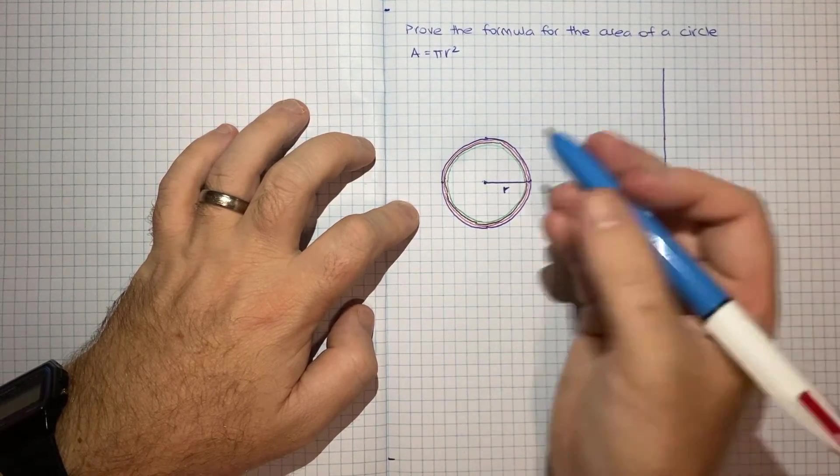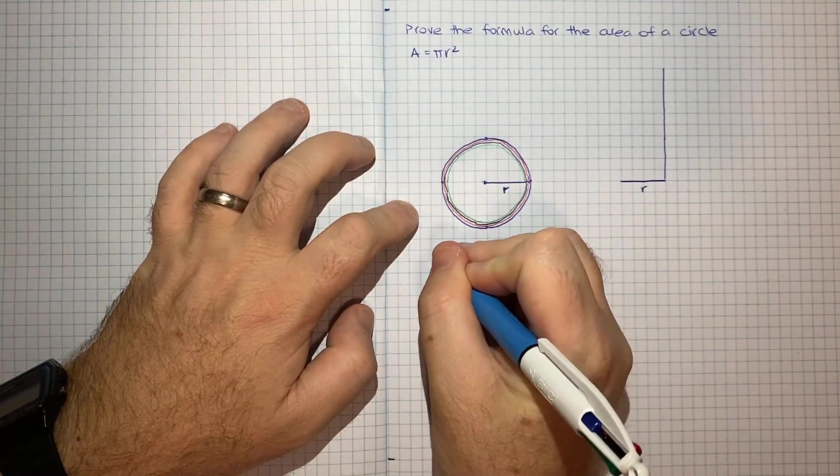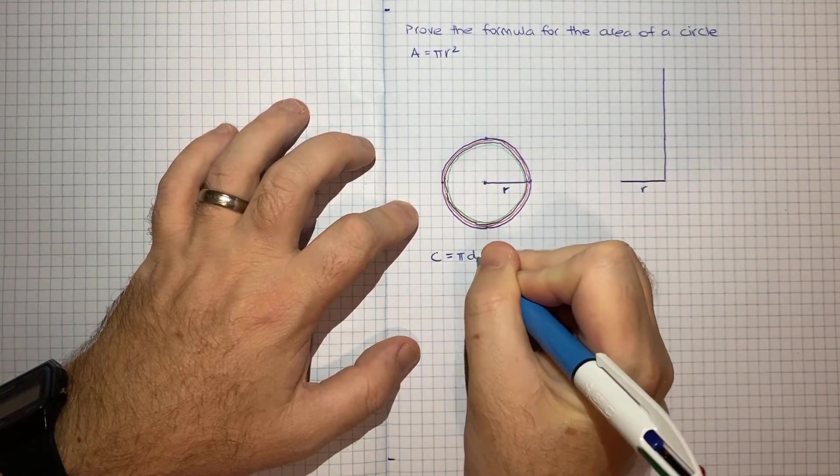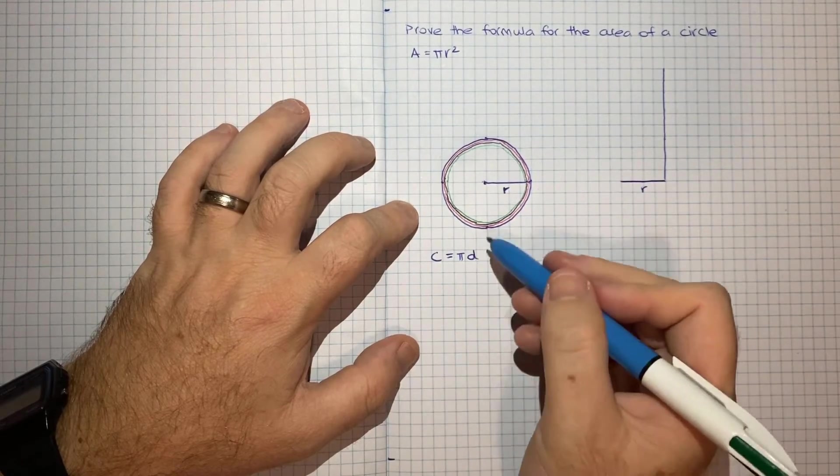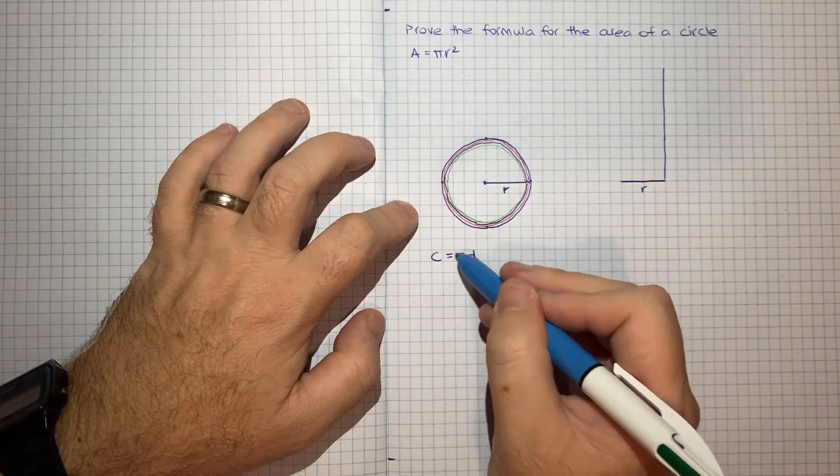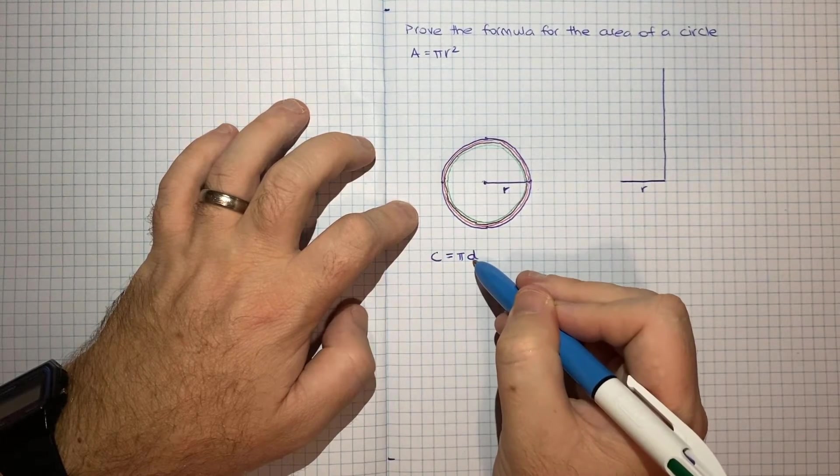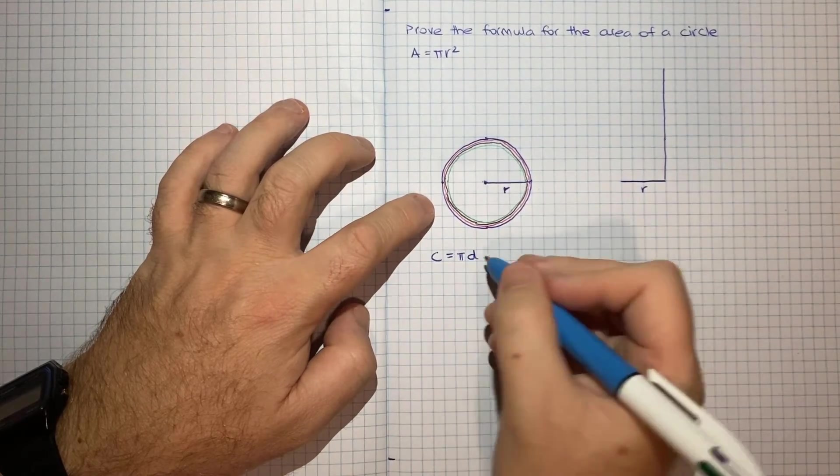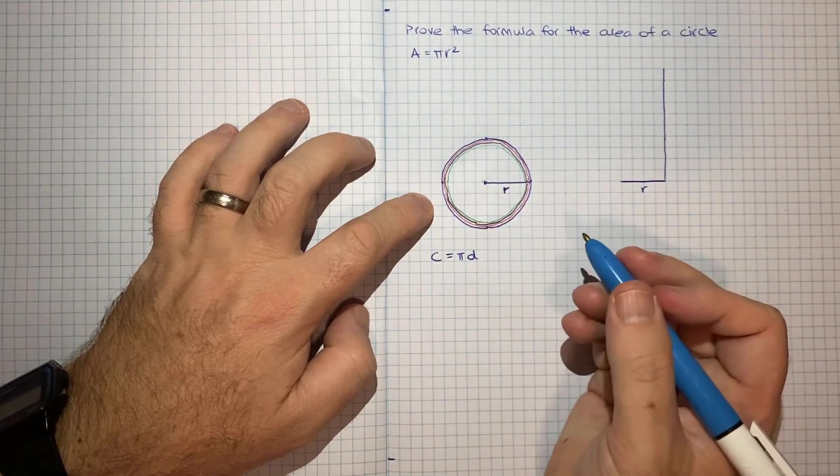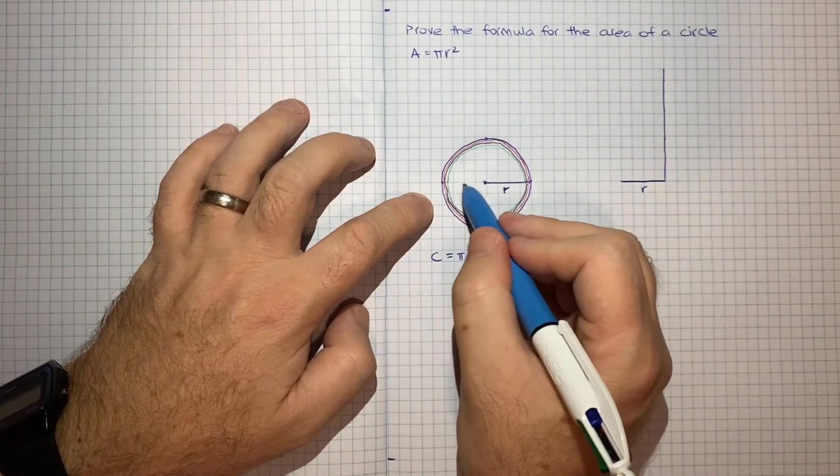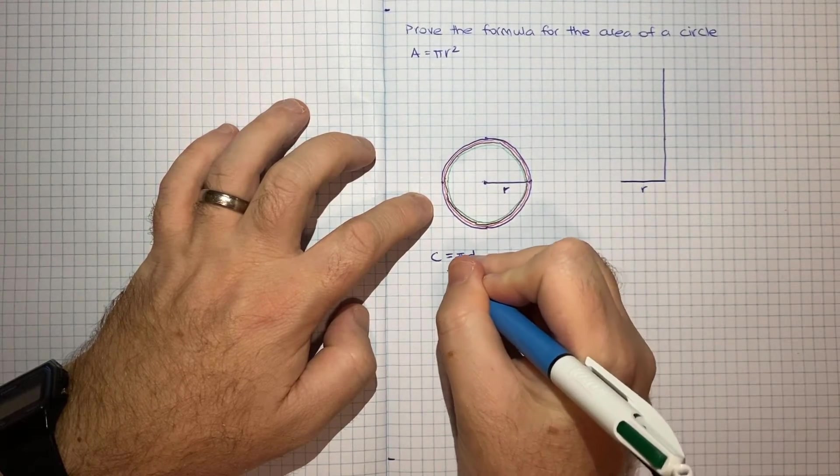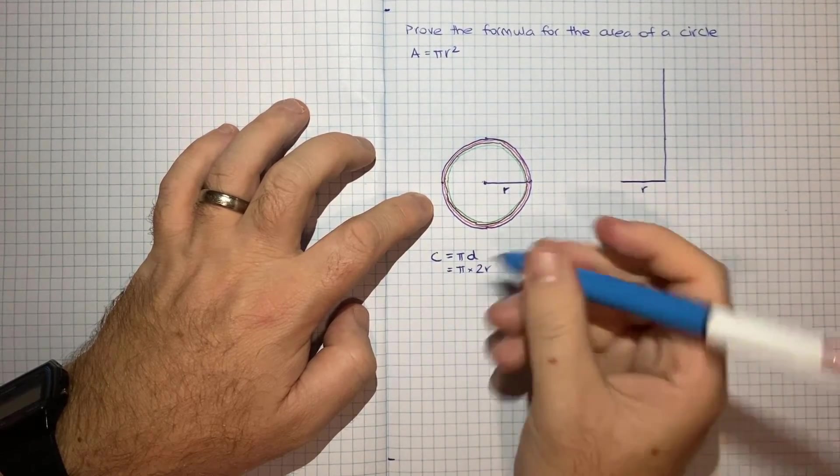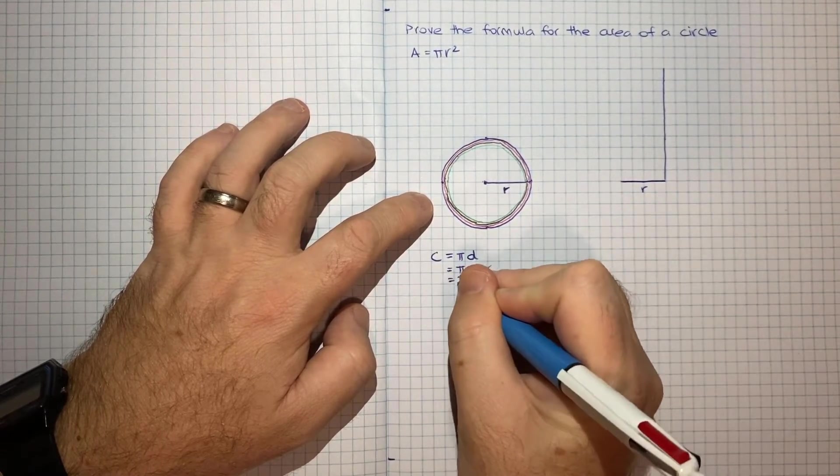And basically we know that the circumference is equal to pi times the diameter. And that's basically just rearranging the fact that pi is defined as the circumference divided by the diameter. So just a simple rearrangement gets you circumference as being pi times the diameter. Diameter we know is just twice the radius. So that's how you can kind of get pi times twice the radius or it's typically written as 2 pi r.